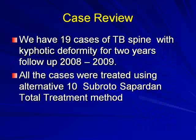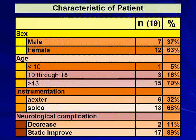In our review, we have 19 cases of TB spine with severe kyphotic deformity since 2018. All cases were treated with the distraction method — we call it the alternative 10 from the Suprosapardan total treatment method. Suprosapardan is our teacher who developed this system of 10-modality treatment for TB spine. Most of our patients are adults. We use the extra-sulcus system. Some regular complications showed decrease in two patients and improvement in certain patients.